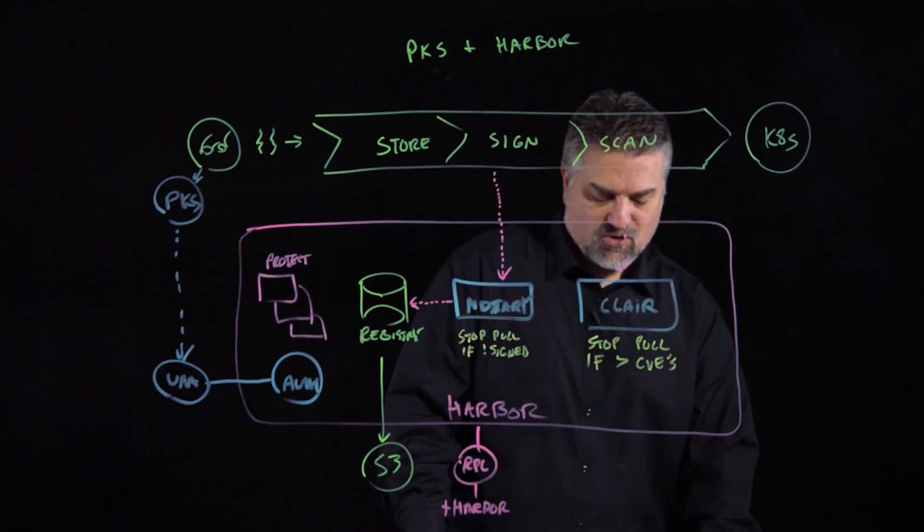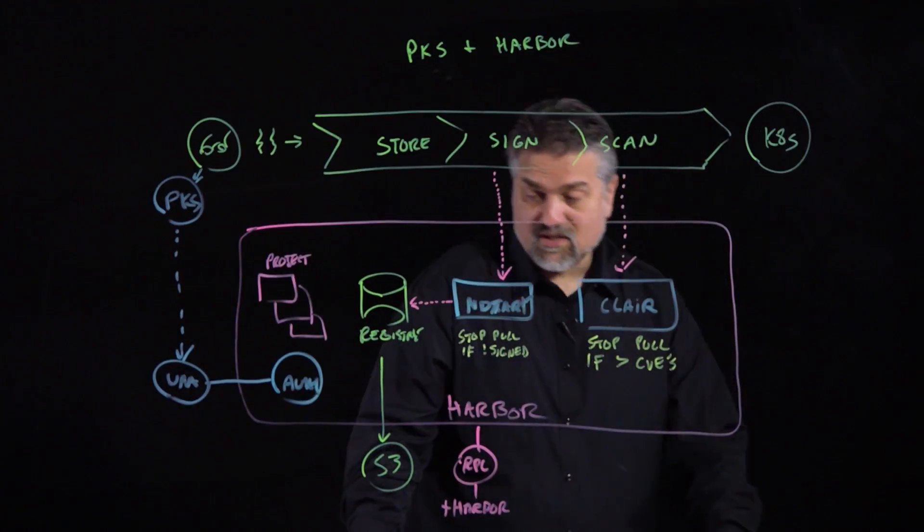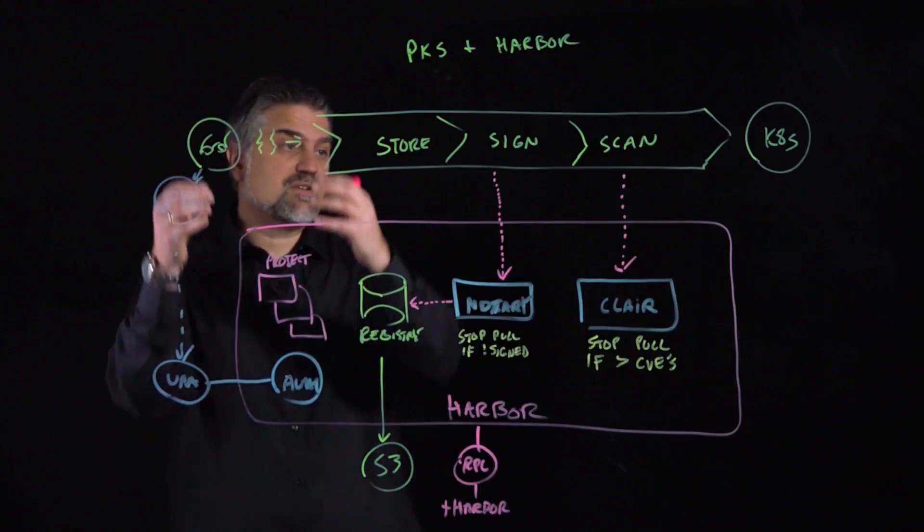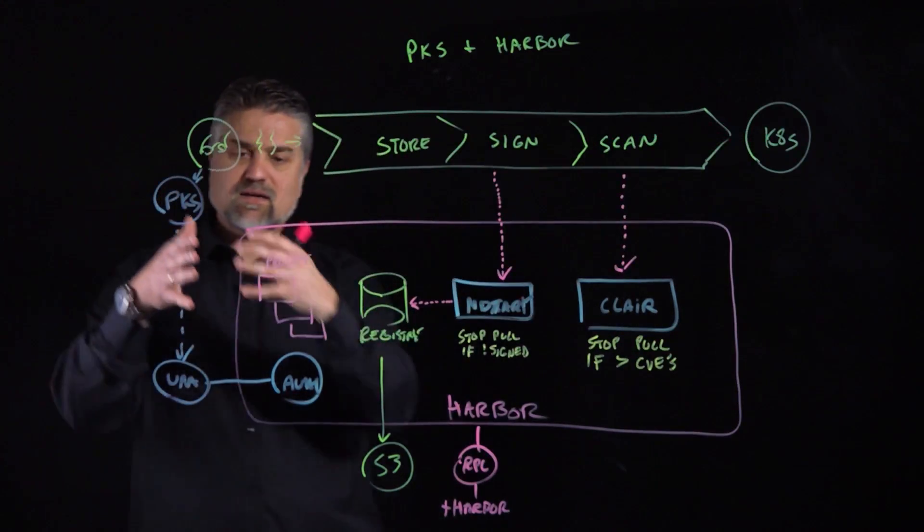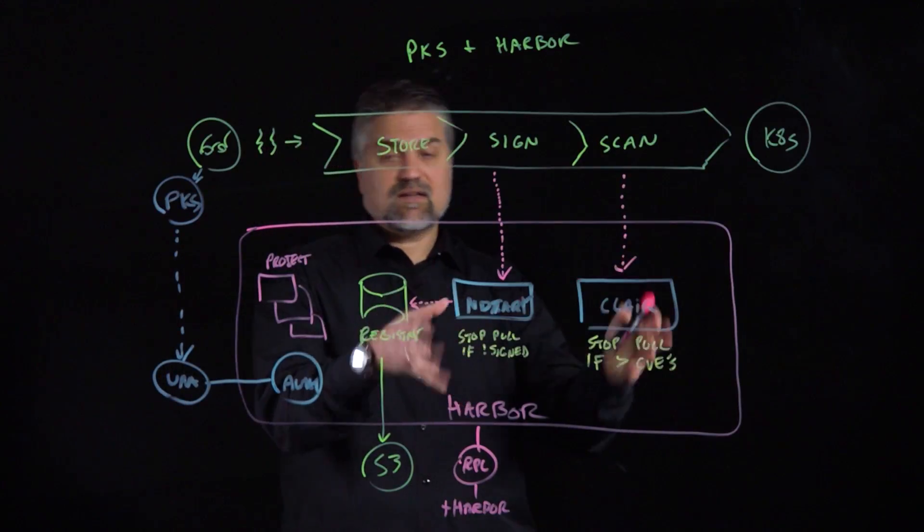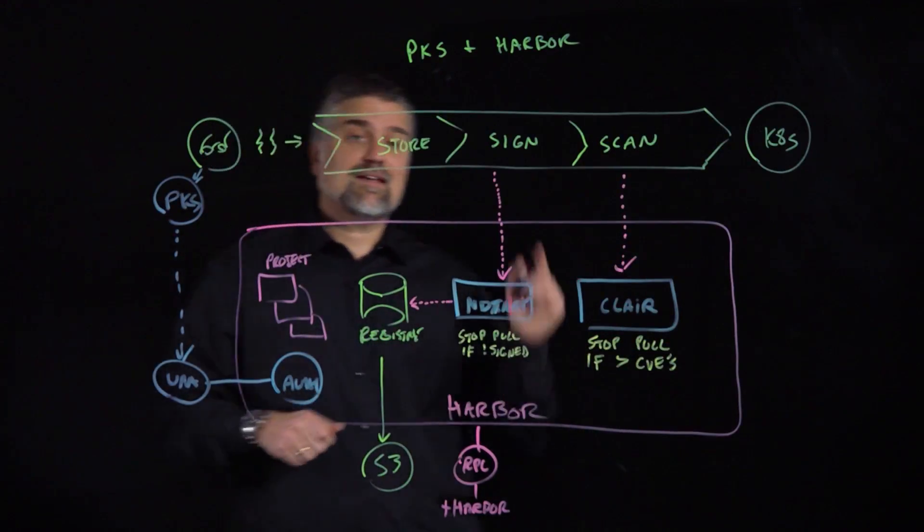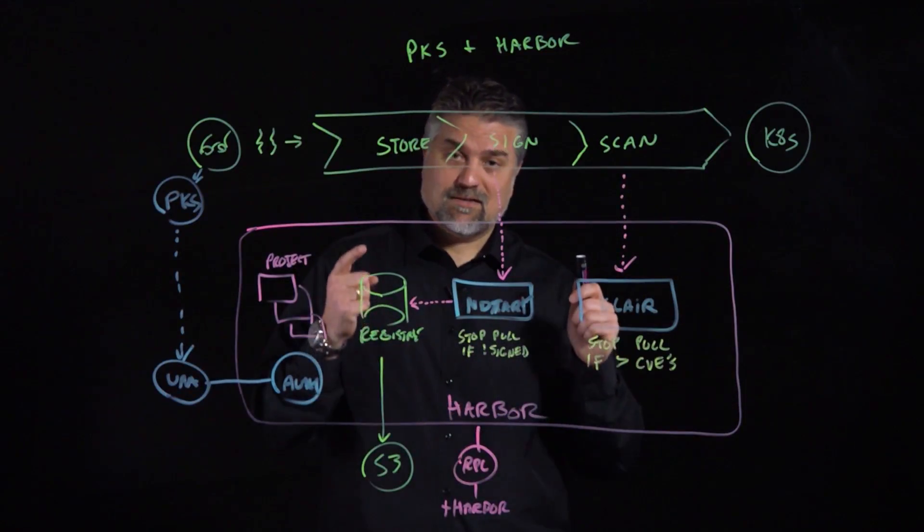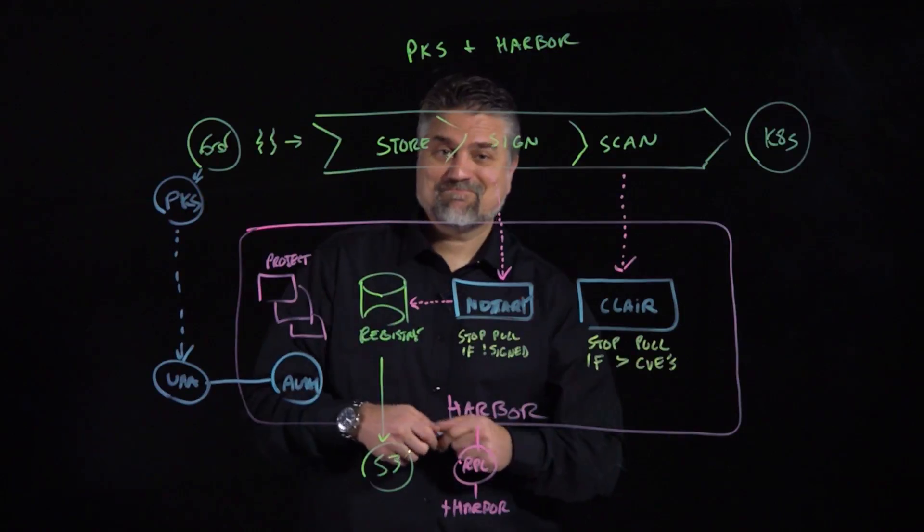So, what really what the integration with Harbor and PKS does for us is allows us to have a common or unified authentication mechanism. So, the developers and development teams that are building our pipelines can also have access to manage and push their images and scan and sign their images in an enterprise-grade registry. And that's how we get enterprise Kubernetes at scale with enterprise-grade registry. Thank you.